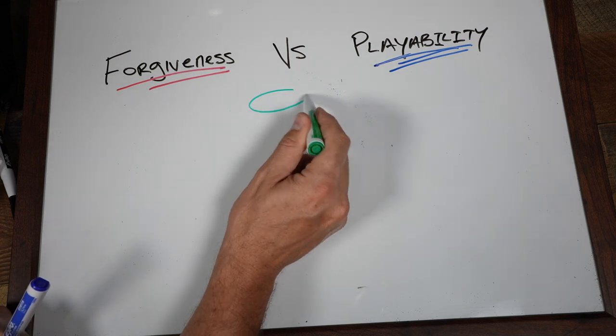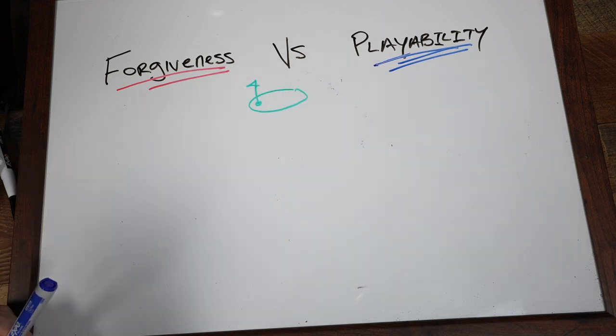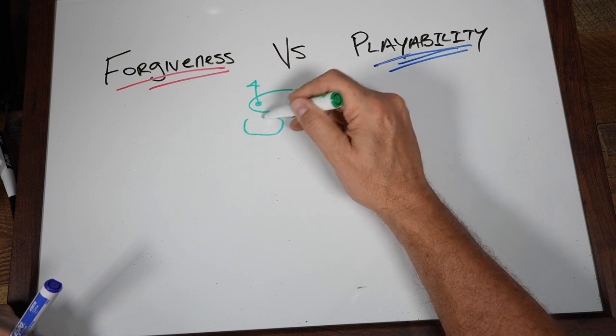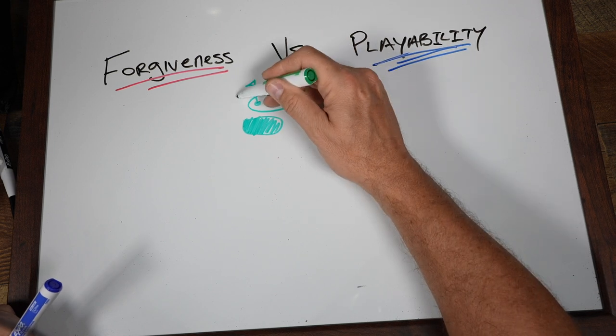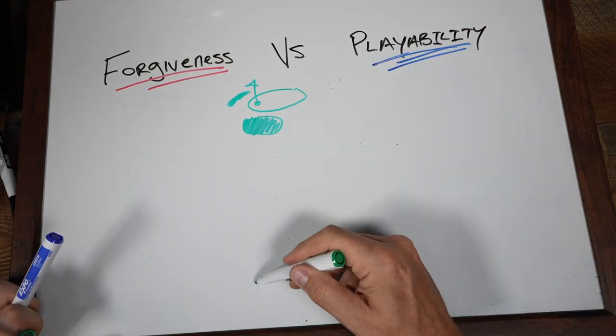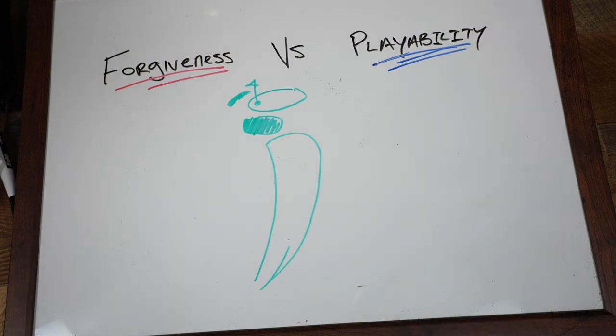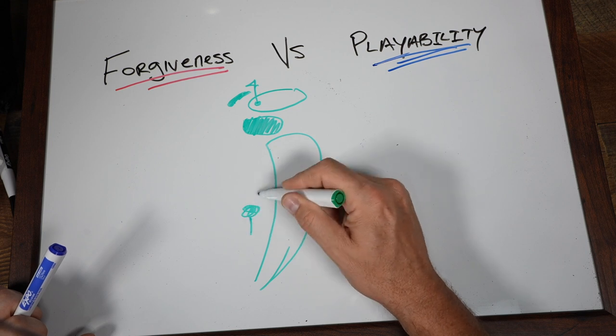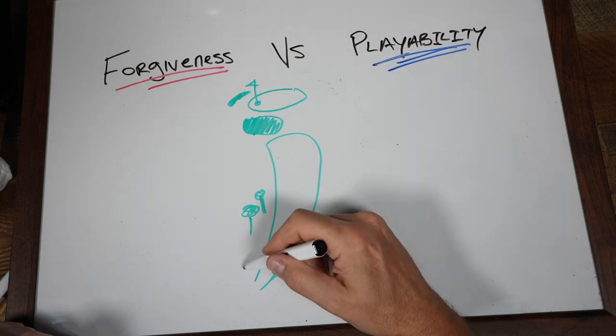With a club that offers premium playability, let's say we've got a green here and the pin is tucked in the left side. You've got a big old bunker short and left which you don't want to miss, and maybe even another bunker along which you don't want to be in. On top of it, this hole may be a little bit of a dogleg. You might have some trees over here that we've got to avoid. A shot like this is going to call for shot shape.